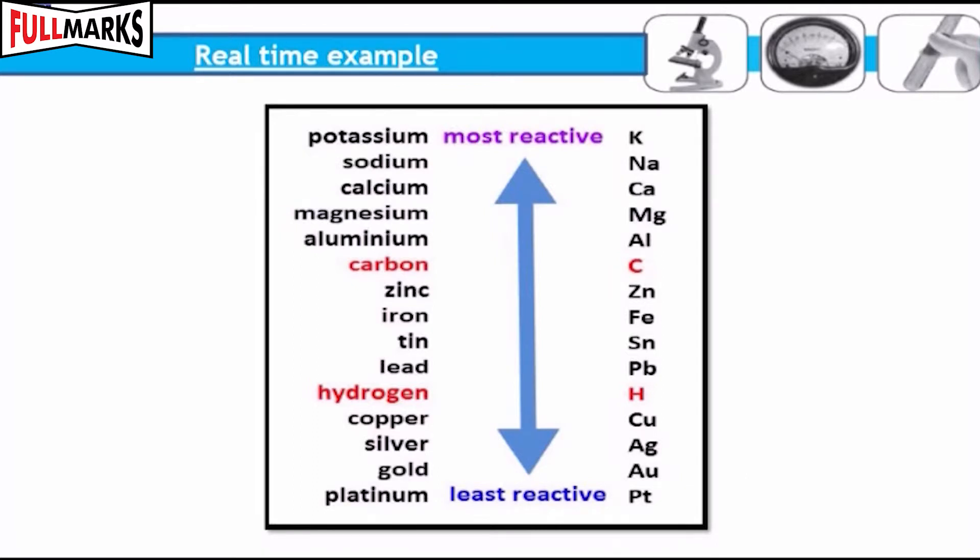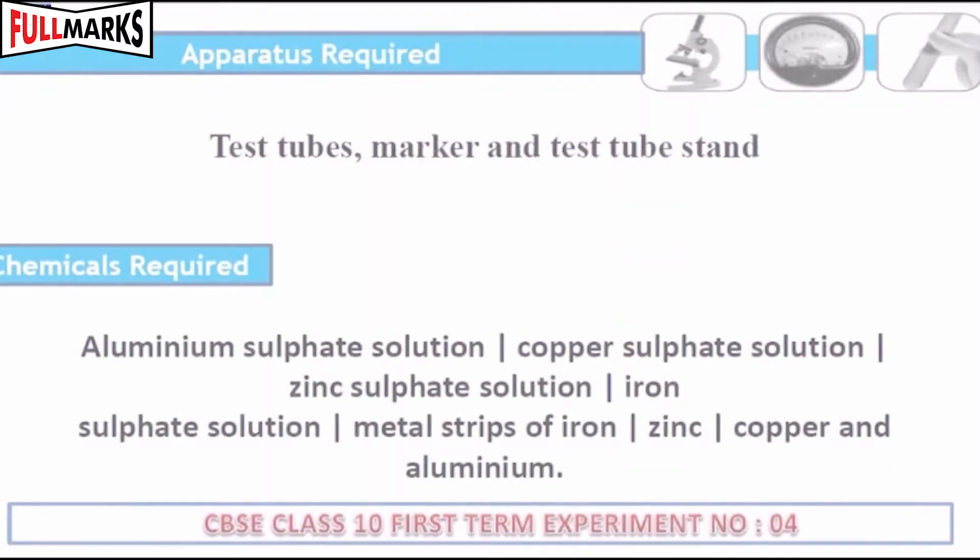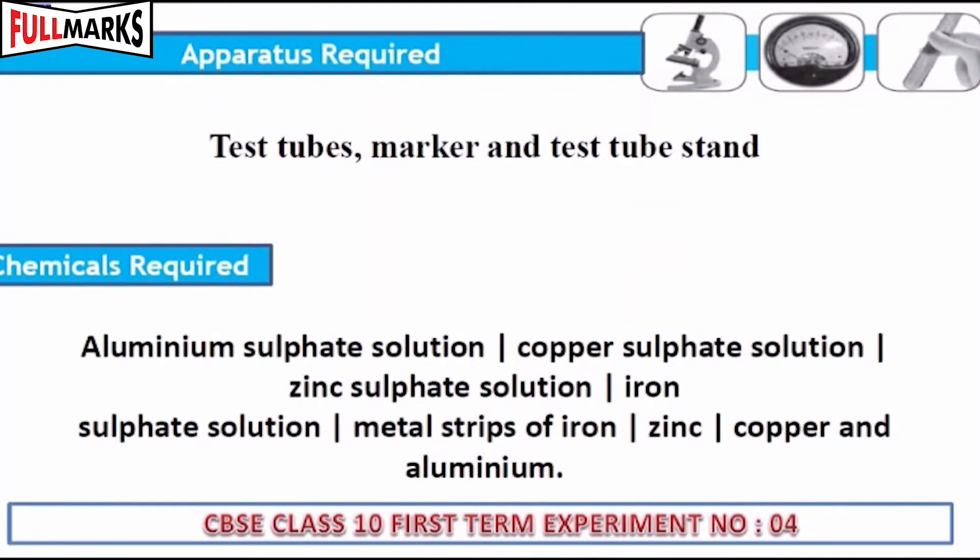Aluminium is actually a reactive metal, but due to the protective coating of aluminium oxide on it, the results may show that aluminium's reactivity rate is slow. Apparatus required: test tubes, marker, and test tube stand.